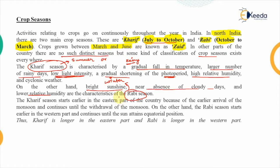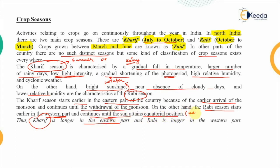The Kharif season starts earlier in the eastern part of the country due to the early arrival of the monsoon and continues until monsoon withdrawal, so the Kharif period is longer in the east. The Rabi season starts earlier in the western part of the country and continues until the sun attains the equatorial position, around March at the equinox, so Rabi crops are longer in the west.